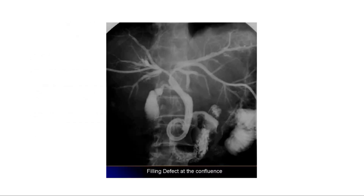This picture shows a filling defect at the confluence of the bile ducts — a case of a Klatskin tumor, where the tumor arises from the bifurcation of the hepatic ducts.